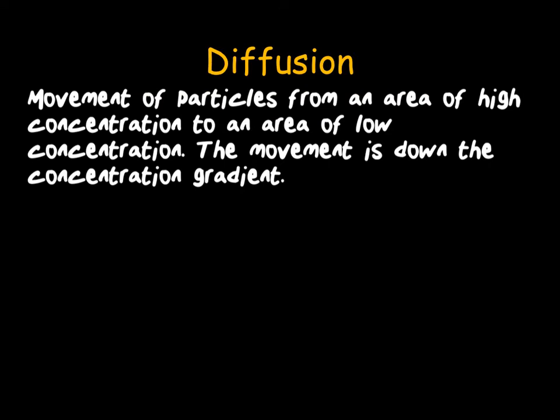The first cell transport we're going to look at is diffusion. Diffusion is the simplest of the cell transports, as it is the gradual movement of particles from a place of high concentration to an area of low concentration — it naturally goes down the concentration gradient. So diffusion is the net movement, that's the overall movement, of particles from an area of high concentration to an area of low concentration, down a concentration gradient. As this is a natural movement down a concentration gradient, it does not require energy. This means it is a passive process.